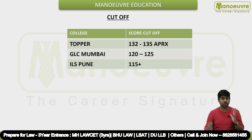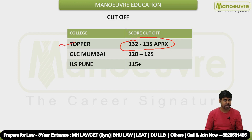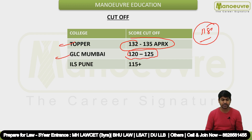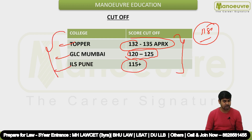Cutoff-wise, this year's topper will likely have a score of 132 to 135. Last year it was 118, but this year the cutoff will definitely increase because the paper was easy. For GLC Mumbai the expected score range is 120 to 125. For ILS Pune the expected cutoff is around 115. These are rough expected cutoffs for being a topper and for GLC and ILS.